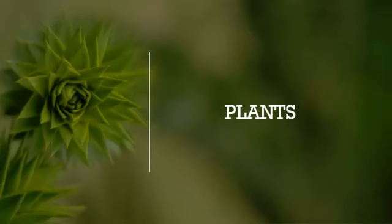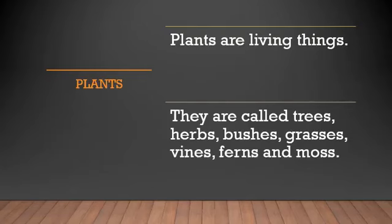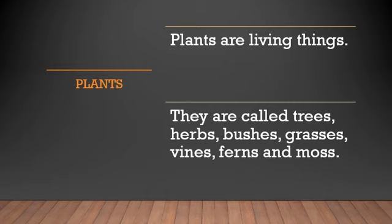Plants are living things, just like us. We are also living things — animals and plants. Plants are called trees, herbs, bushes, grasses, vines, ferns, and mosses. These are the different kinds of plants, which you will be learning properly in detail in the later video.